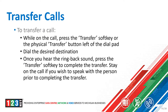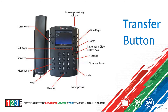To transfer a call when you're on the call, press the transfer soft key or the physical transfer button left of the dial pad. You would then dial the desired destination, whether that be an extension or a full 10-digit number. If it's just an extension number, you will have to press the send soft key to initiate the call. Once you hear the ring-back sound, you can end the call to complete the transfer, or stay on the call if you wish to speak to the person first. The transfer button is directly above the messages or voicemail button.